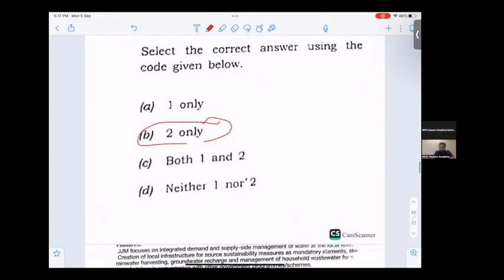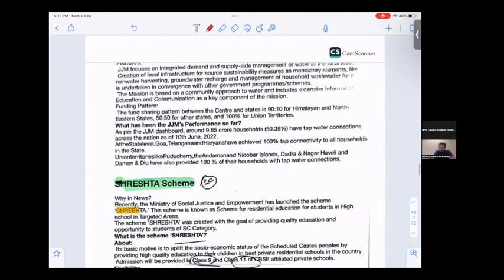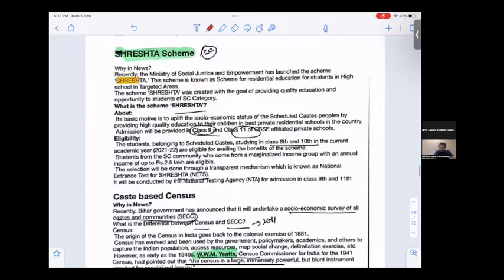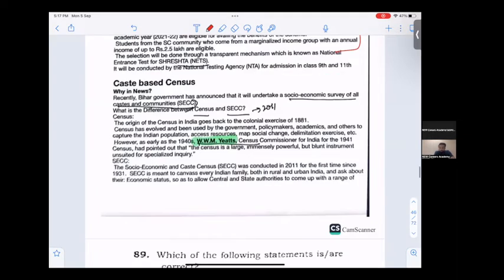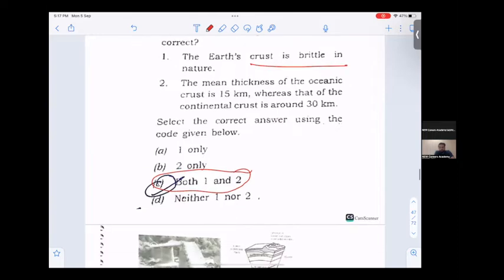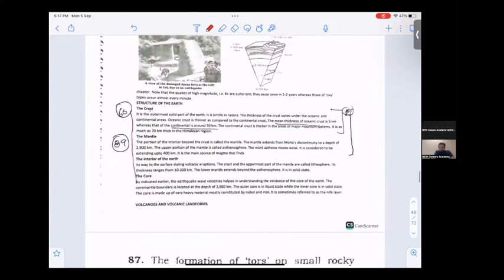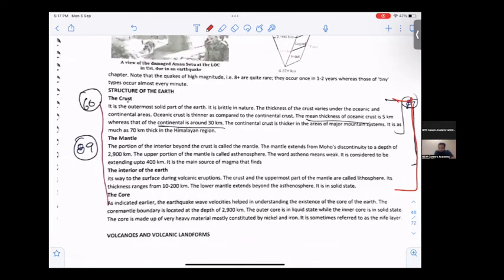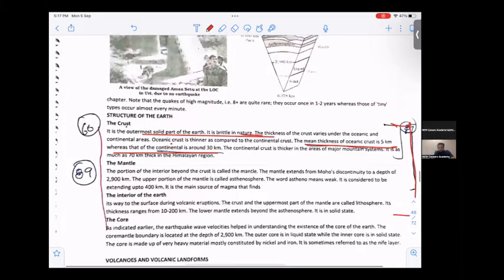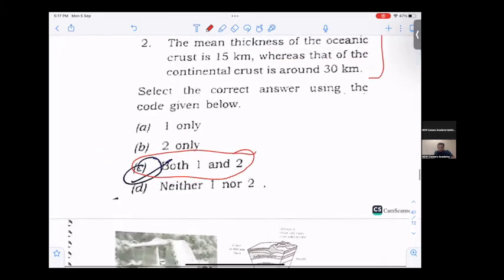So it's B, I think so. This is from the June current affairs which I have explained and you can go through it again. Earth's crust is brittle. This is part of geography. Both one and two is correct if you go through it. Let me just go through it word by word. Oceanic, the thickness—the outermost solid part of the earth is brittle in nature. The main thickness of oceanic crust is 5, whereas continental is around 30. Exactly word to word. Both one and two.